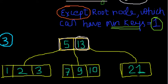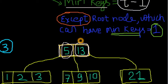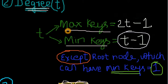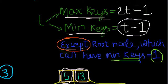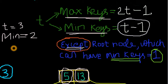When you get degree, you can know the maximum keys that a node can hold and the minimum keys. But there is an exception: the root node can have minimum equal to 1. Let's suppose T, our degree, is given as 3. So minimum keys it can hold is T minus 1, that is 2.